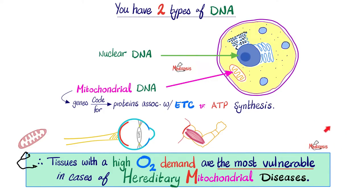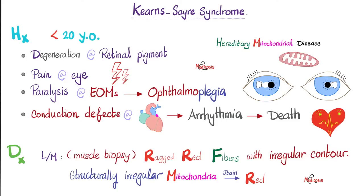Kearns-Sayre syndrome is another hereditary mitochondrial disease. Most patients present with symptoms before their 20th birthday. What's going on? Degeneration of the retinal pigment causes visual problems. There is also ptosis — droopy eye — another ophthalmological condition. There is paralysis of the extraocular muscles, which normally move the eyes up, down, right, and left. When you cannot do this, you get ophthalmoplegia — paralysis of eye muscles — and as a result you get double vision, or diplopia.